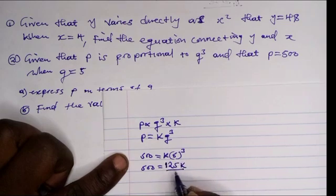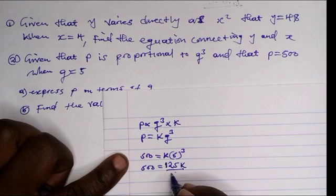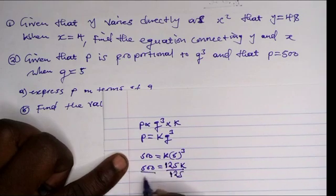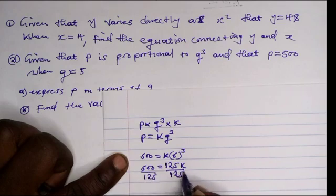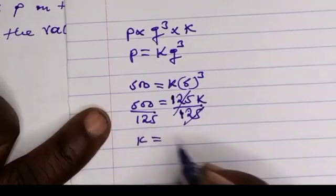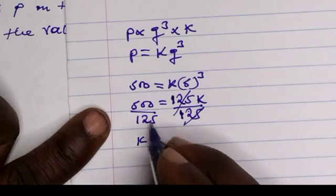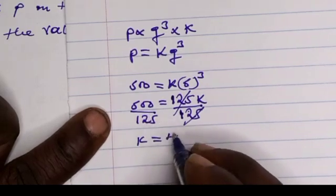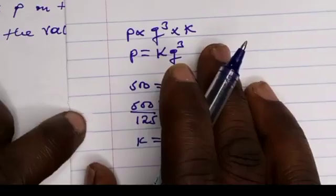We divide both sides by 125 because we are looking for the constant. k equals 500 divided by 125, which is 4.